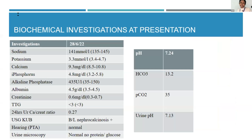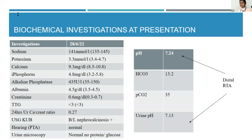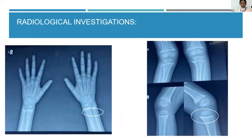Biochemical investigations revealed potassium of 3.3, and calcium and phosphorus were essentially within the normal range for age. Alkaline phosphatase was about three times elevated. Renal function was normal, celiac disease was ruled out, and ultrasound showed bilateral nephrocalcinosis. Hearing assessment was normal and urine microscopy showed no proteinuria or glycosuria. Blood gas analysis at baseline showed acidosis in the presence of a urine pH greater than 5.5, suggesting a diagnosis of distal RTA. Radiography of the wrist and knee showed cupping and fraying of the metaphysis and flaring as well.